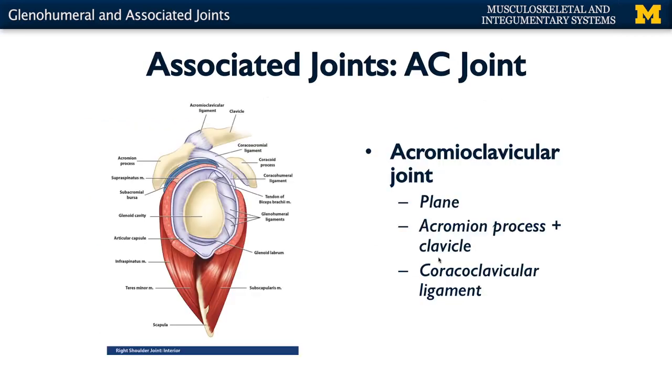We've been discussing the glenohumeral joint — your true shoulder joint — but very closely associated is your acromioclavicular joint, visible right in this region. You have your clavicle, which you can palpate anteriorly; follow it to the point of your shoulder and that's your acromioclavicular joint. This is not nearly as mobile as your glenohumeral joint — it's actually a plane joint, capable of sliding movements. There's slight sliding of the scapula on the clavicle, and this movement at the AC joint is what allows for the full range of motion at the shoulder joint. For full abduction, pointing your arm up as high as you can, you have to have movement at your AC joint as well.